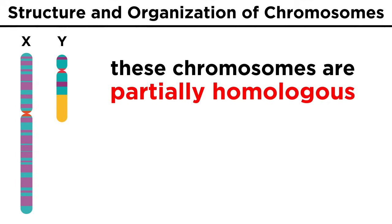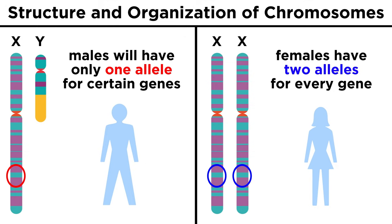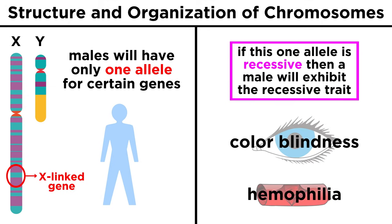These two chromosomes are partially homologous, but the Y chromosome is missing genes that are present on the X chromosome, as the Y is much smaller. This means that males have only one allele for certain genes, where females will have two. These are called X-linked genes because they are present only on the X chromosome and not the Y. In such a case, if the singular allele is recessive, a male will express the recessive phenotype, as there is no dominant allele present to override this. There are a number of disorders attributed to X-linked genes, such as colorblindness and hemophilia.